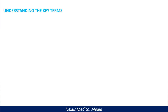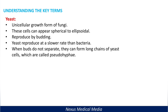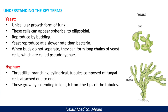To have a clear understanding of fungi, there are terms we need to go through. The first is yeast — a unicellular growth form of fungi. The shape varies from spherical to ellipsoidal. Reproduction of yeast is through budding. They reproduce at a slower rate compared to bacteria. When buds do not separate, they can form a long chain of yeast cells, called pseudohyphae. Hyphae are thread-like branching cylindrical tubules composed of fungal cells attached end to end. Hyphae grow by extending in length from the tips of the tubule.